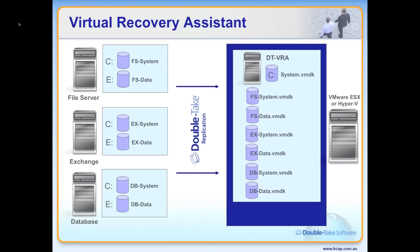ESX requires the use of a Virtual Recovery Assistant guest virtual machine running Windows and Double Take Availability. The image on screen shows three servers protected by VRA. The VRA guest auto-provisions replica virtual machines on the ESX farm, then connects directly to the VM disks.